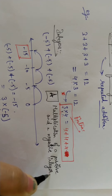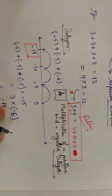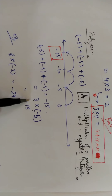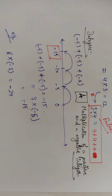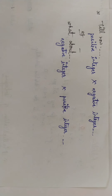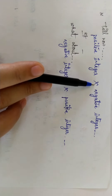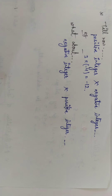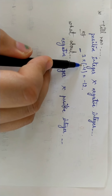Multiplication of a positive and a negative integer: multiplication is repeated addition. Here, 3 is a positive integer and minus 5 is a negative integer — you multiply the numbers and put a negative sign in the answer. For example, 3 multiplied by minus 4: that is a positive integer multiplied by a negative integer, and the answer is minus 12.